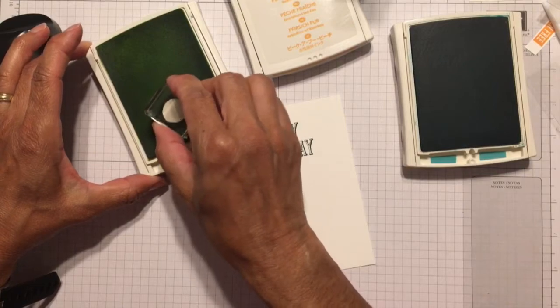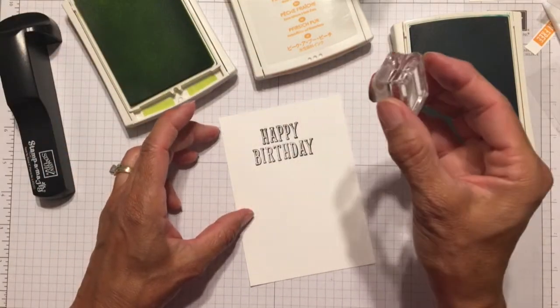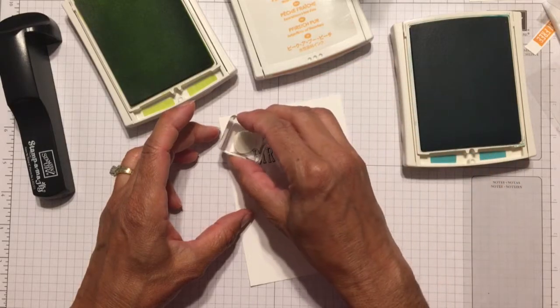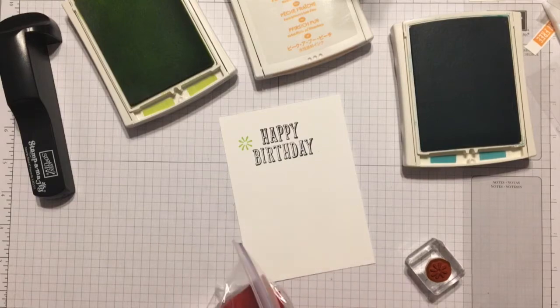To add a little more color to the inside of the card, I'm stamping this kind of starburst image from the stamp set. And I'm stamping it in three different colors. I'm using Lemon Lime Twist, Peek-A-Boo Peach, and Bermuda Bay.